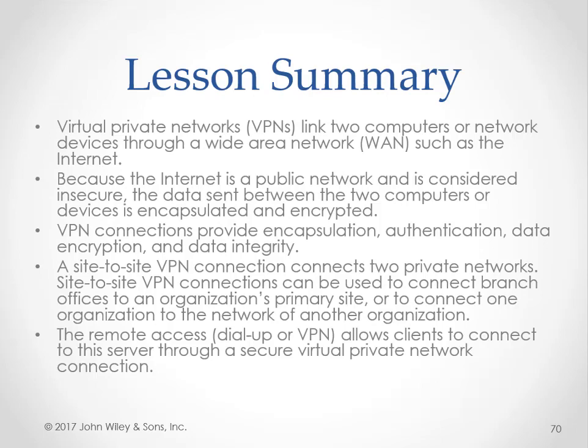To recap: VPNs link two computers or network devices through a wide area network, such as the Internet — from a single computer connecting to its home network to allowing two locations to create a static tunnel. Because the Internet is public and insecure, data is encapsulated and encrypted. VPN connections provide encapsulation, authentication, data encryption, and data integrity, therefore maintaining two of the three pillars of cybersecurity. Those pillars are confidentiality, integrity, and availability. VPN connections maintain confidentiality and integrity, however they do not provide availability.